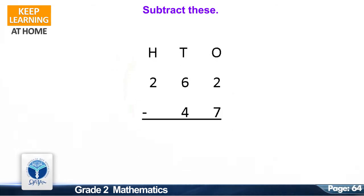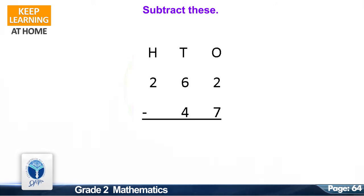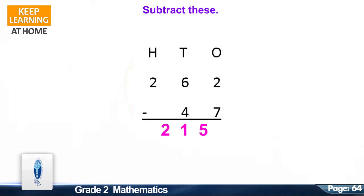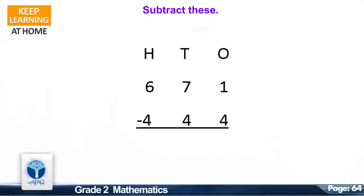Now we move on to the next resource pack concept: Subtract these. Let's start. The first question is 262 minus 47. The correct answer is 215. The next question is 671 minus 444.